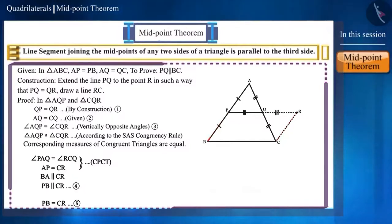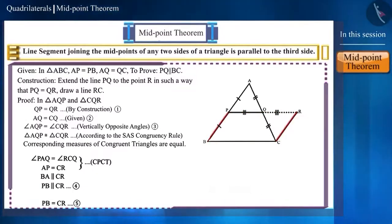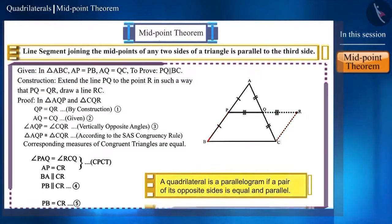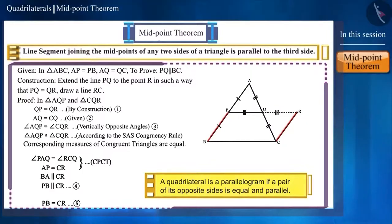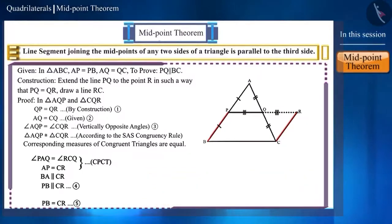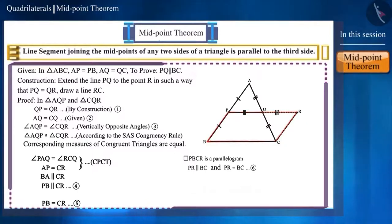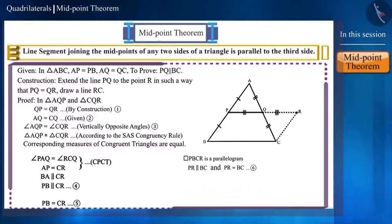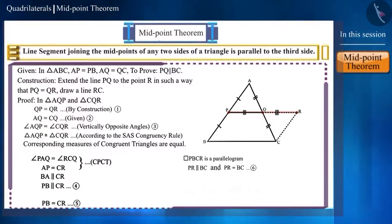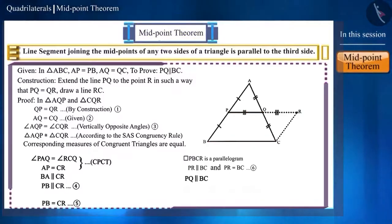Friends, look at the quadrilateral PBCR. It has a pair of opposite sides that are parallel and equal. We have learnt that a quadrilateral is a parallelogram if a pair of its opposite sides is equal and parallel. Therefore, using this theorem, we can say that PBCR is a parallelogram. Hence, the sides PR and BC will be parallel and equal. Since points P, Q and R are on the same line, the line segment PQ and the side BC will also be parallel. In this way, we prove the midpoint theorem.